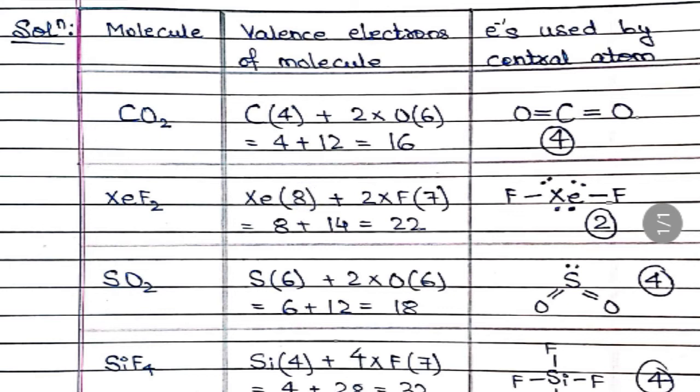XeF2: xenon, which is an inert gas, has eight valence electrons, plus fluorine having seven, twice of that would be fourteen. Total would be 8 + 14 = 22. Xenon just makes two bonds with fluorine, hence electrons used by central atom is two.